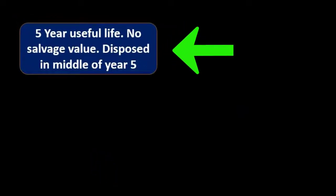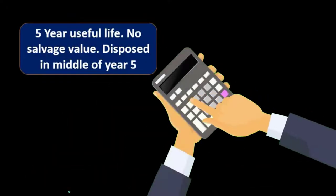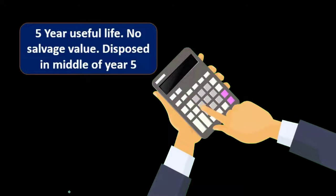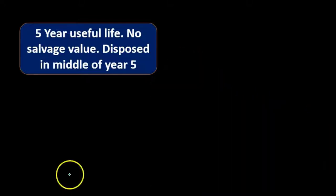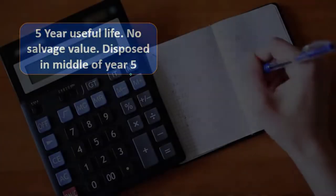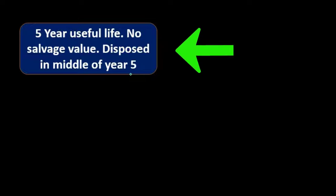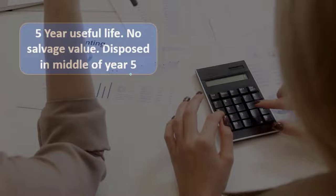In our example, we have a five-year useful life, no salvage value, disposed of in the middle of year five, and we received $15,000. We first want to calculate the amount of depreciation that has not yet been recorded. This is five-year property sold in the middle of year five, and our assumption is that depreciation is only being recorded at the end of each year.